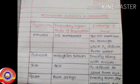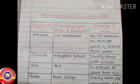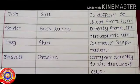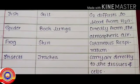In spider, the respiratory organ is the book lungs, and the exchange of gases is directly from the atmospheric air. In frog, the respiratory organ is the skin — here cutaneous respiration takes place, meaning respiration occurs through the skin.